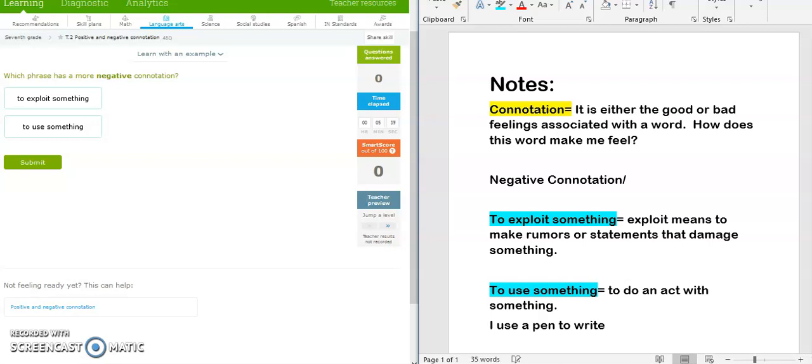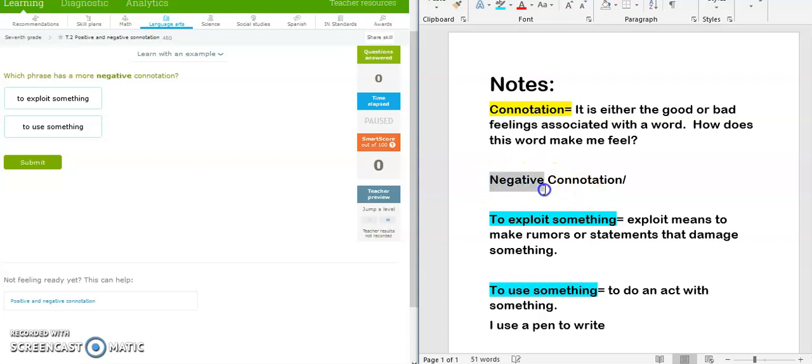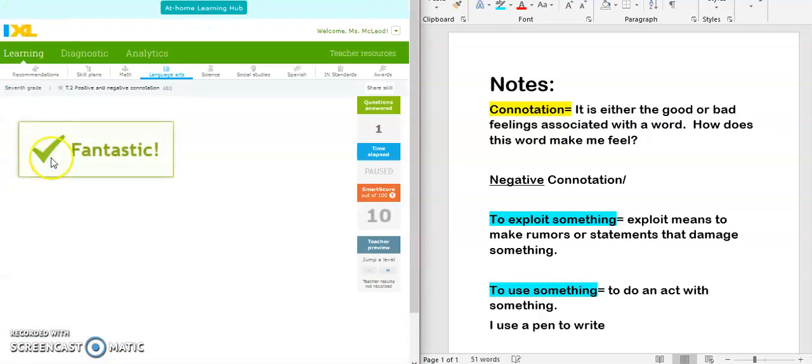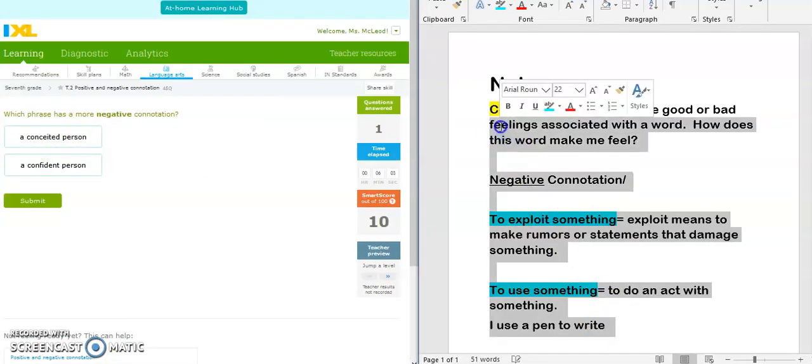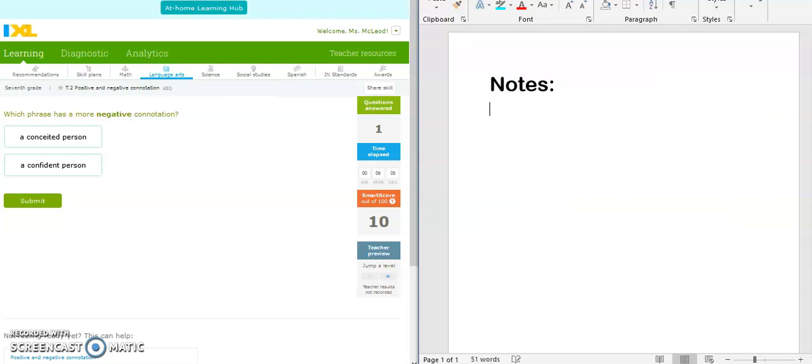So if I look at these two, I have exploit something which means to damage it or make rumors. If I wanted to exploit Spider-Man to the public, I would go around and say all these nasty things about him and get people to dislike him. But if I use Spider-Man to save my life, that means I called on him. So which one of these is more negative? Definitely going to go with exploit. I'm going to come up here to my answer box. Check exploit. Boom. I'm going to erase my notes so we can do this again.